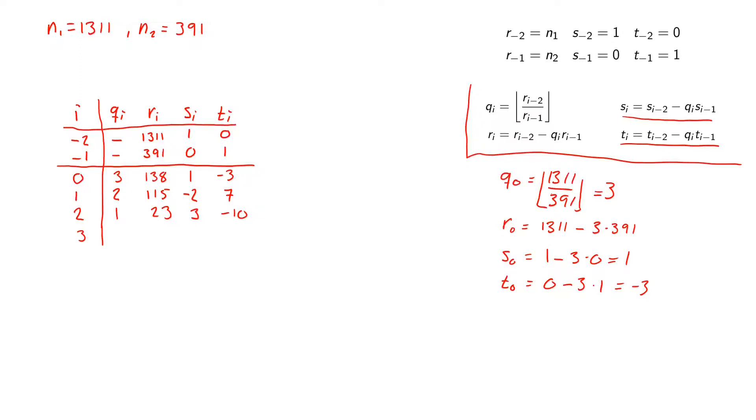For the third row we have q_3 which is 115 divided by 23, this is 5, with a remainder 0. And here s_3 is minus 2 minus 5 times 3, so this is minus 17. And t_3 will be 7 minus 5 times minus 10, so this will be 57.